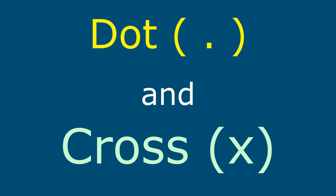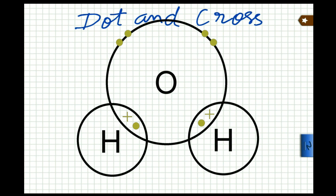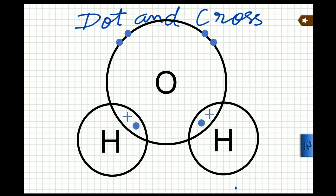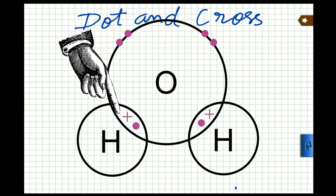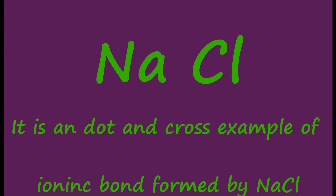In this video I will explain about dot and cross structure of a compound. When two elements are formed by ionic bonding or they share their electrons to form a covalent bond, it may be represented by dot and cross structure. For Class 9 students, it is included in the syllabus.